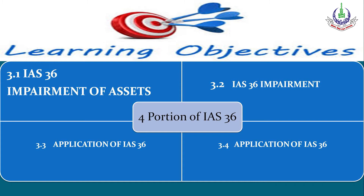So we can divide this IAS into 4 parts. The first two parts will cover what the IAS says — what International Accounting Standard says about Impairment of Assets. The last two parts will cover Application of IAS 36, where we will go through questions, practical problems, and their solutions — the practical application.